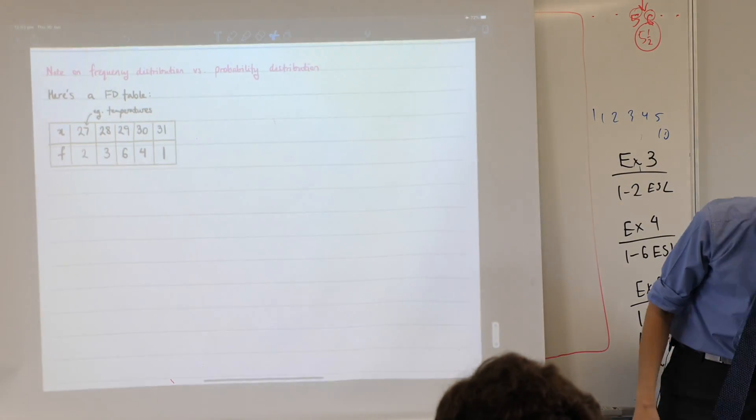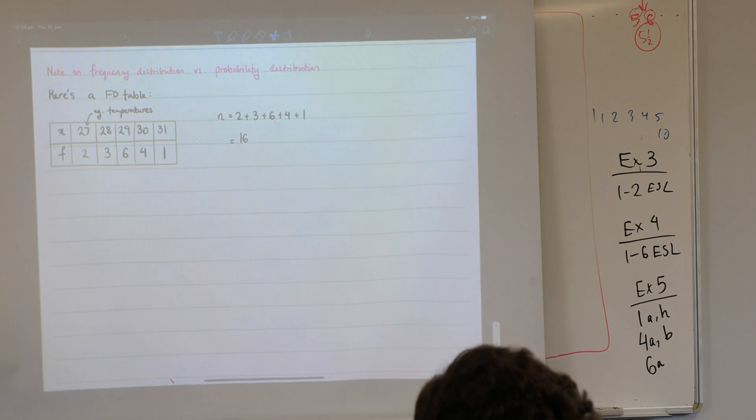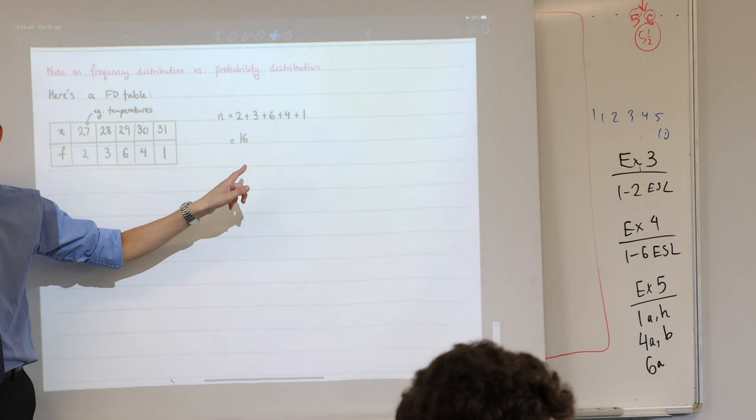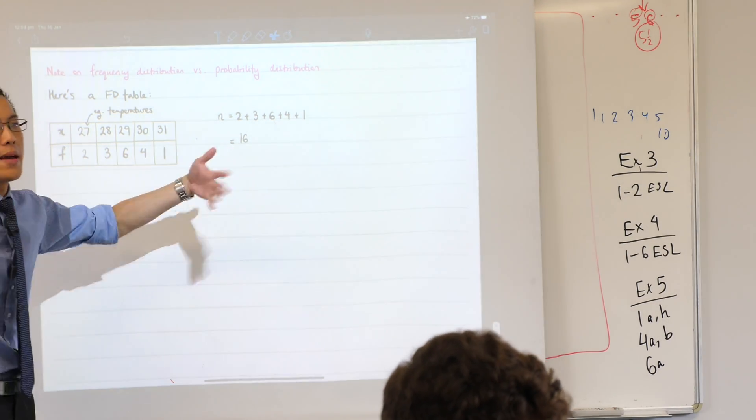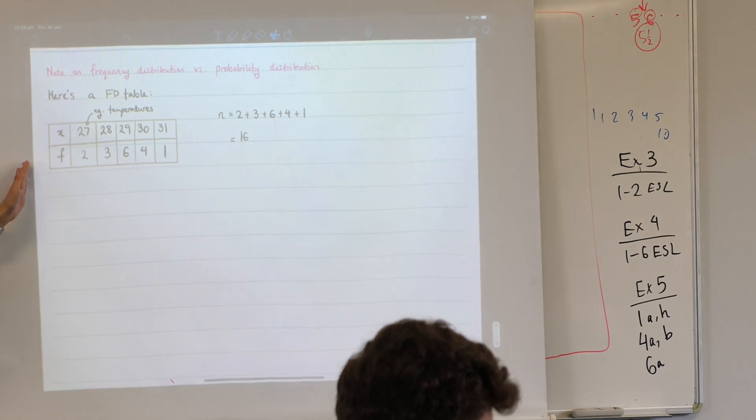Now remember if you want to work out a measure of central tendency like say the mean. If you want the mean then you're gonna have to add up stuff and divide by however many things you got. So you can see here n equals 16, I've added them all up.